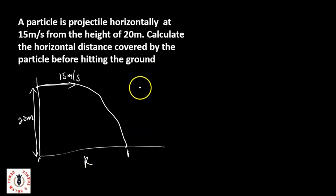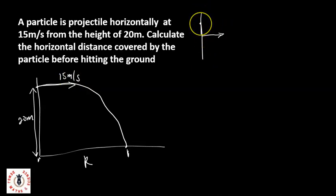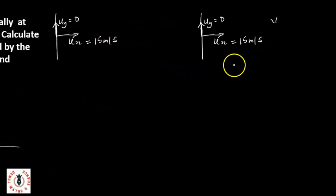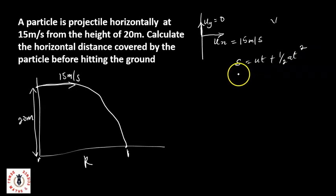For this motion, the particle was projected with an initial velocity of 15 meters per second horizontally. Since it's projected horizontally, the vertical component u_y equals zero, while the horizontal component u_x equals 15 meters per second. We use the equation s equals ut plus half a t squared. For the vertical movement, s is 20 meters and u_y is zero.